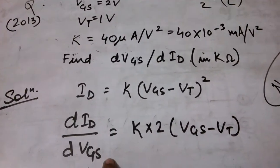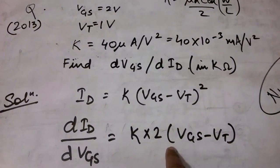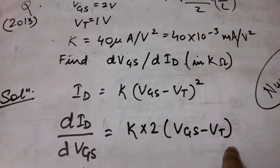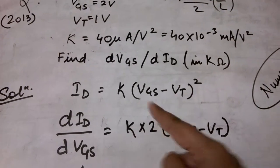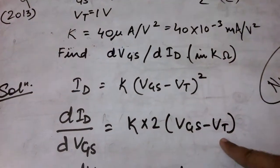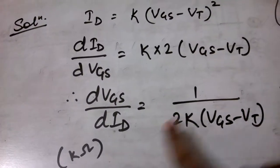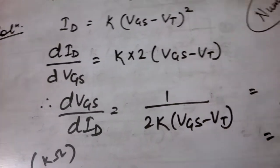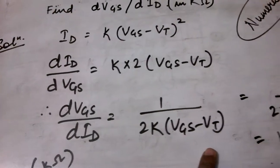Now I take the reciprocal of this result to get the desired result: dVGS/dID = 1/[2K·(VGS - VT)].